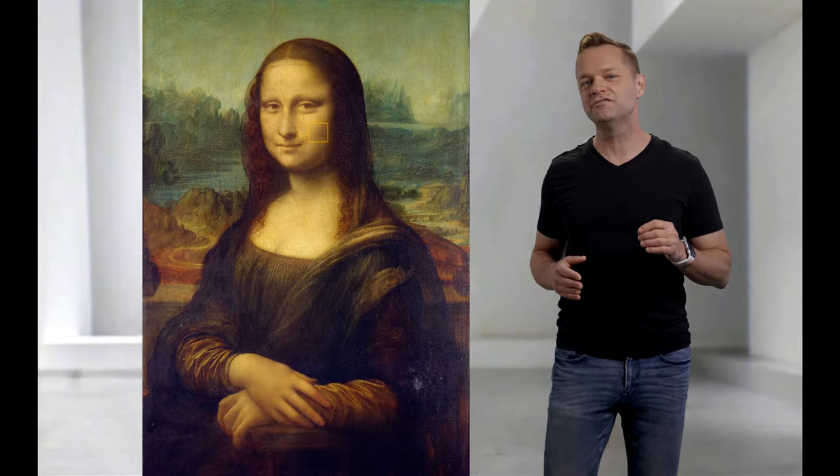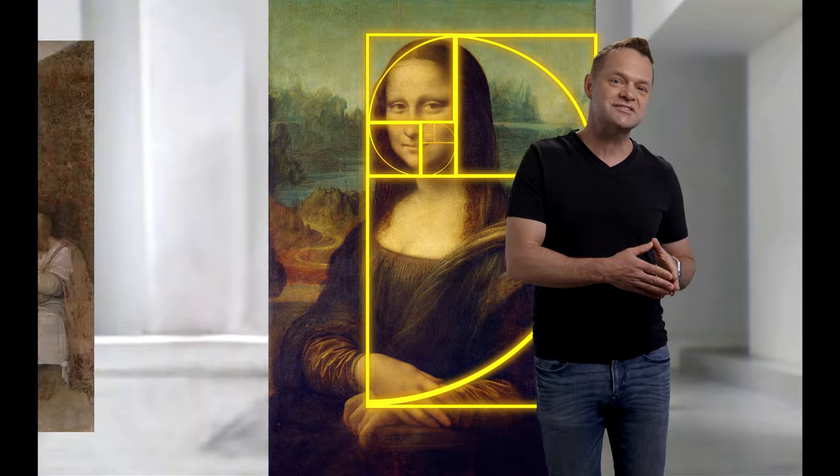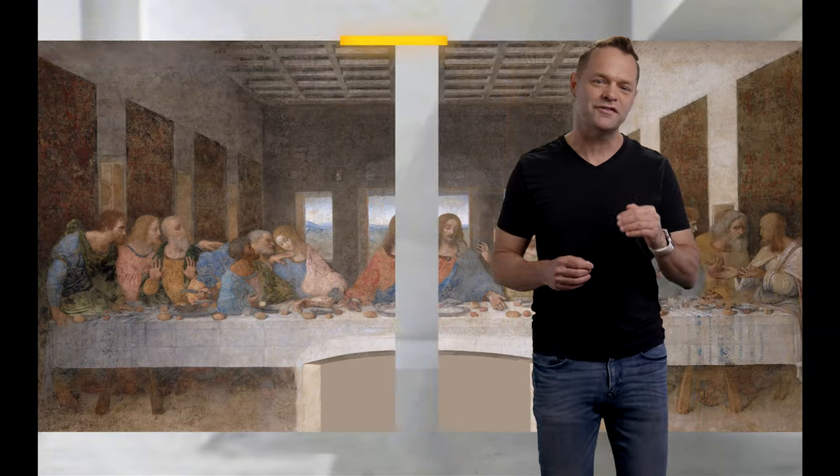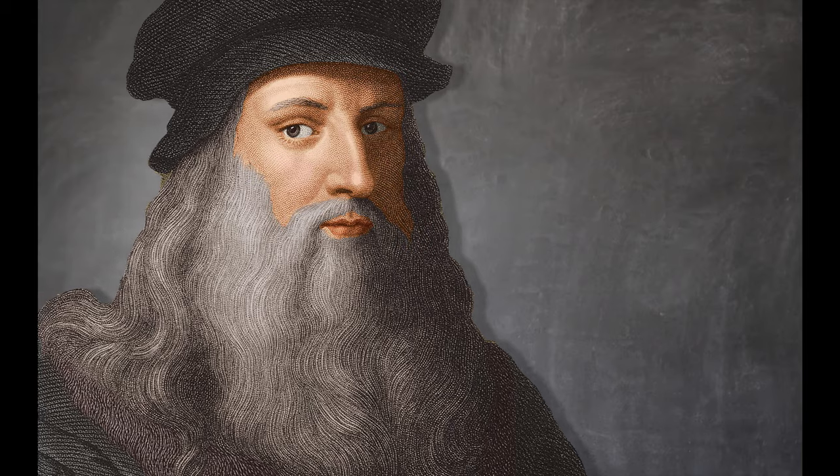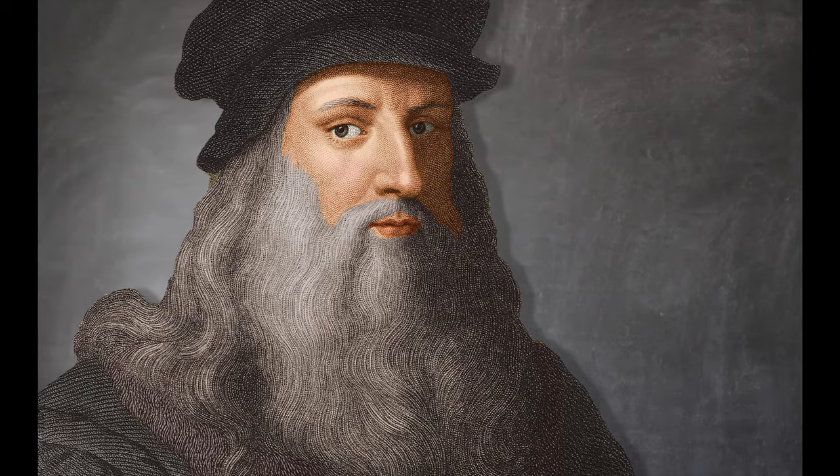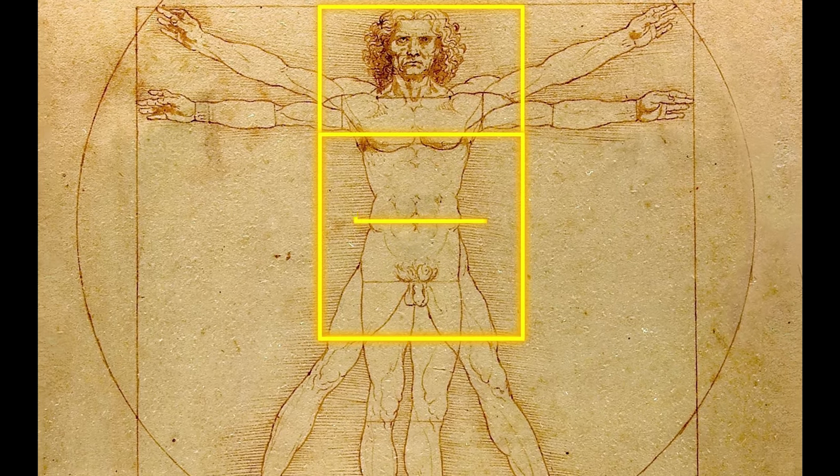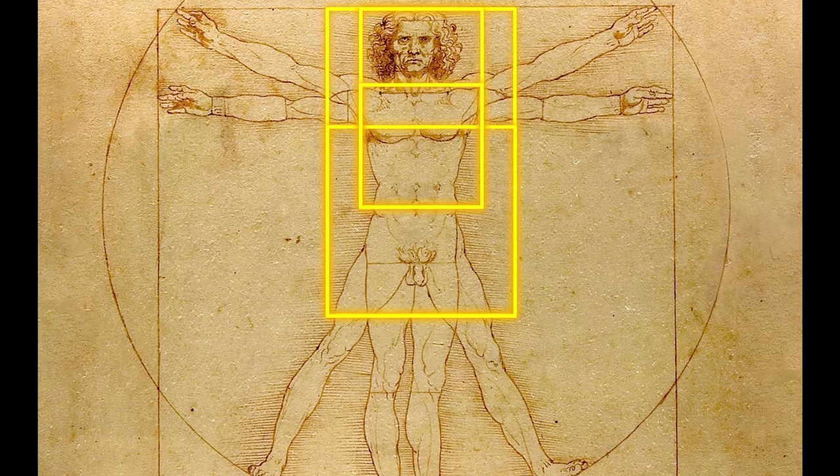Check out how Da Vinci used the golden ratio from the Mona Lisa to the Last Supper. The ratio allowed him to create perfect balance, focus, and symmetry. In fact, Da Vinci believed it to define what he called, quote, the perfect proportion man, a ratio artists had already been using throughout history.